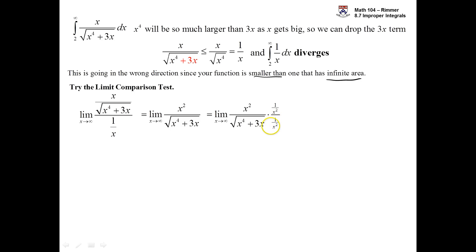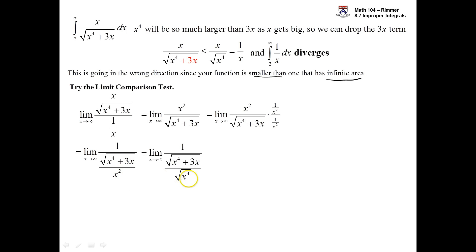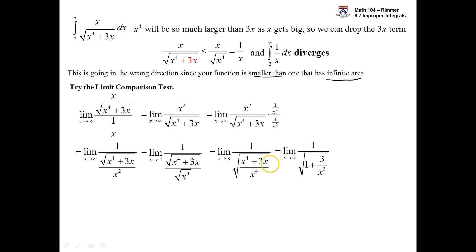In the denominator, we rename x squared as the root of x to the fourth, so we have a root in both numerator and denominator that we can combine into one root. This lets x to the fourth over x to the fourth cancel, leaving 1 minus 3x over x to the fourth inside the root. The 3x over x to the fourth simplifies to 3 over x cubed. This is desirable because we know 3 over x cubed goes to zero as x gets big.